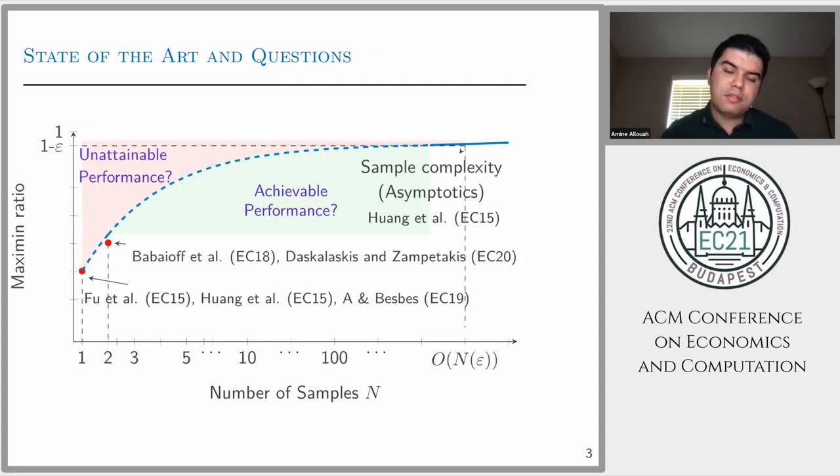So in this work, we study a fundamental data-driven pricing problem in algorithmic game theory, which is the following: How should the decision-maker price based on a finite number of samples from the distribution of values of customers and what type of guarantees?